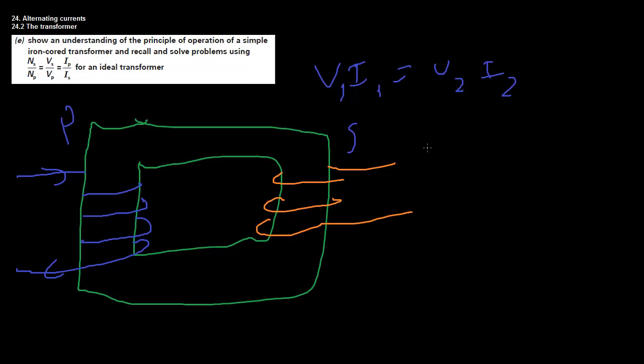Then we kind of just have this law, which is based on that principle, which says the number of coils in the primary, N1, divided by the number of coils in the secondary, N2, is equal to the voltage in the primary over the voltage in the secondary, V1 over V2, is equal to the current in the secondary over the current in the primary, I2 over I1. So what we have to remember is the number of coils, the ratio is the same as voltage, but it's inverse of the current.